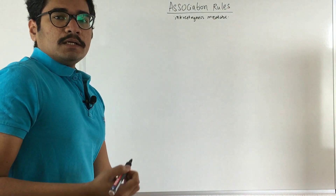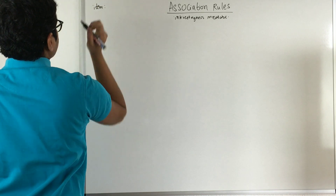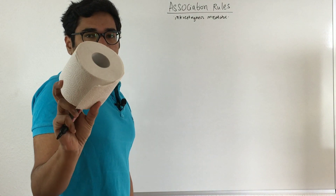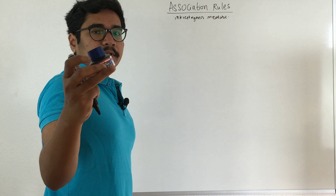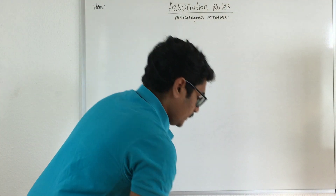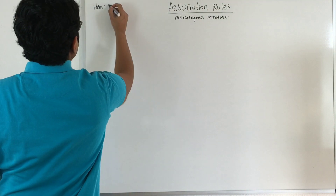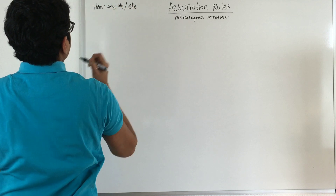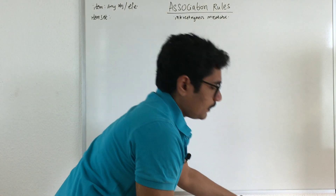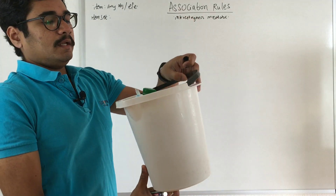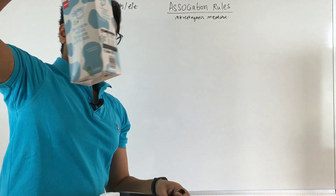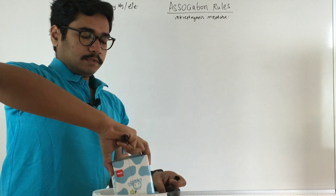First, let us define what an item is. An item is any particular thing — for example, a roll of tissue, a refill station, or a shaving cream. It can be any object or element. An item set is a collection of items; say you have a basket containing one juice and one milk — those are two items that are frequently occurring.